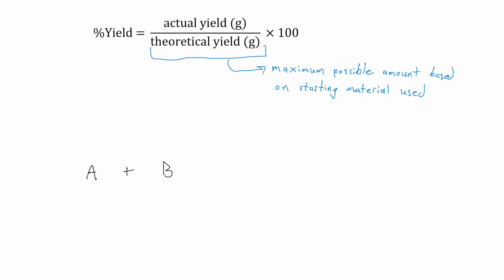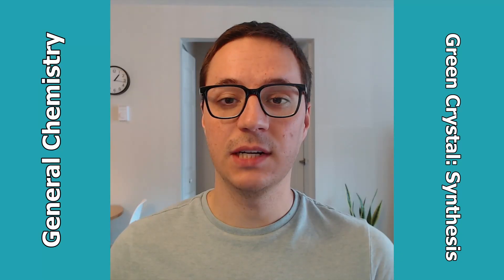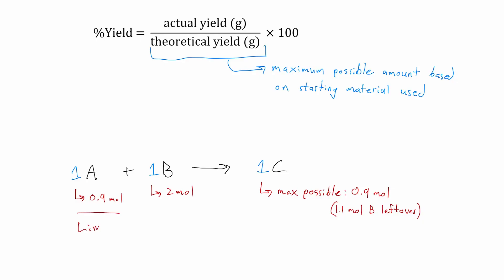Consider this generic reaction: two reactants are combined to make a product and they all have a stoichiometric coefficient of 1. If 0.9 moles of A and 2 moles of B are combined, they can only possibly produce 0.9 moles of C. All of the A will react, leaving some B left over. Whichever reactant runs out first in this scenario is labeled the limiting reagent.